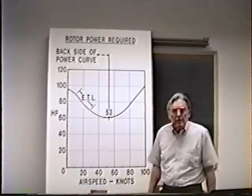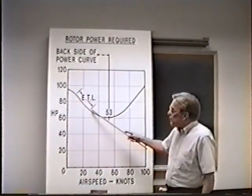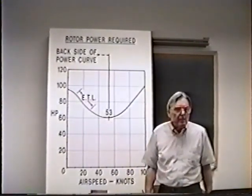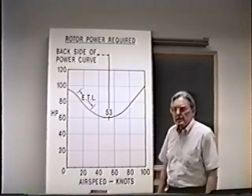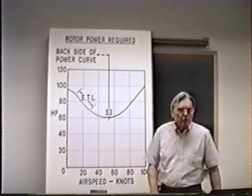And this frequently gets involved in training accidents and other accidents with the helicopter. One of the things the pilot will do wrong is he will get on the backside of that power curve, where it is unstable with power and airspeed. Very quickly, he'll end up at a very, very low airspeed.